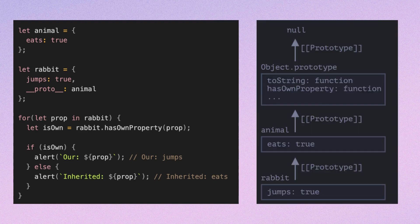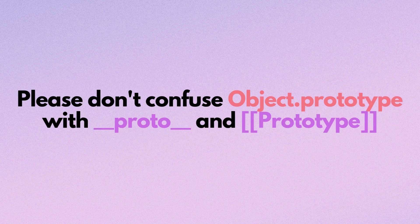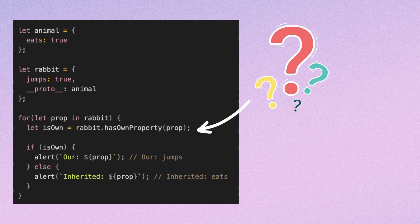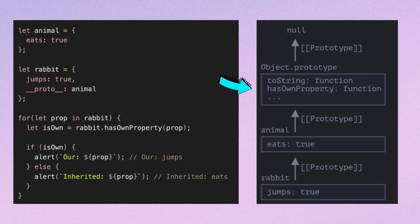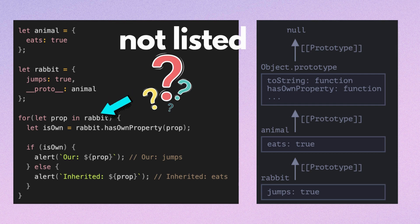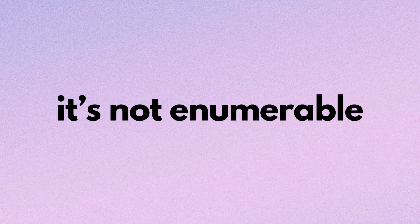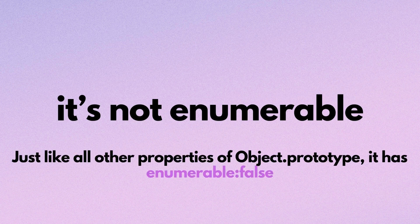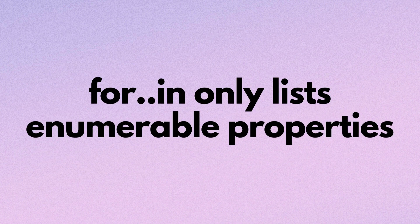Here we have the following inheritance chain: rabbit inherits from animal, which inherits from Object.prototype, and then null is above that. Please don't confuse Object.prototype with __proto__ and the prototype property — they are different things. Where is the method rabbit.hasOwnProperty coming from? We didn't define it. Looking at the chain, we can see the method is provided by Object.prototype.hasOwnProperty — in other words, it's inherited. But why does hasOwnProperty not appear in the for...in loop, like eats and jumps do? The answer is simple: it's not enumerable. Just like all other properties of Object.prototype, it has enumerable set to false, and for...in only lists enumerable properties.